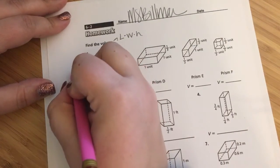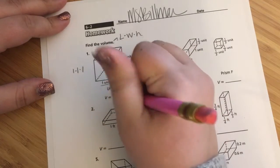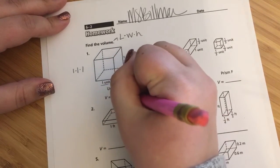I multiply 1 by 1 by 1, knowing volume is length times width times height, and I get 1. So, I write it as 1 unit cubed.